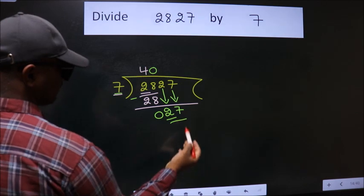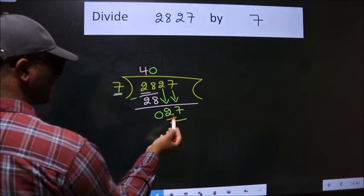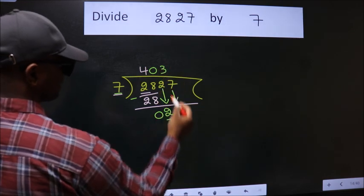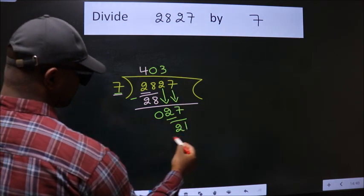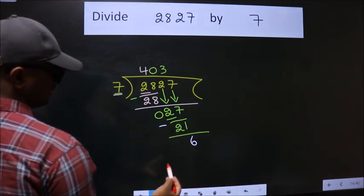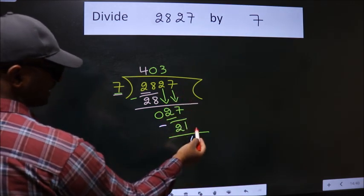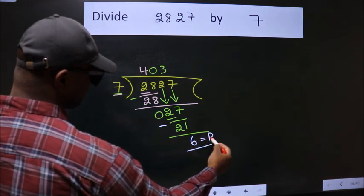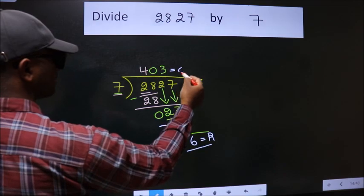So 27. A number close to 27 in the 7 table is 7 times 3, which is 21. Now we subtract. We get 6. No more numbers to bring down, so we stop here. This is our remainder. This is our quotient.